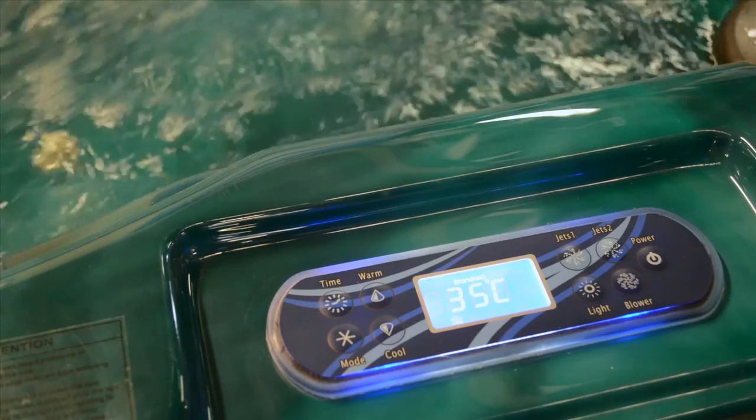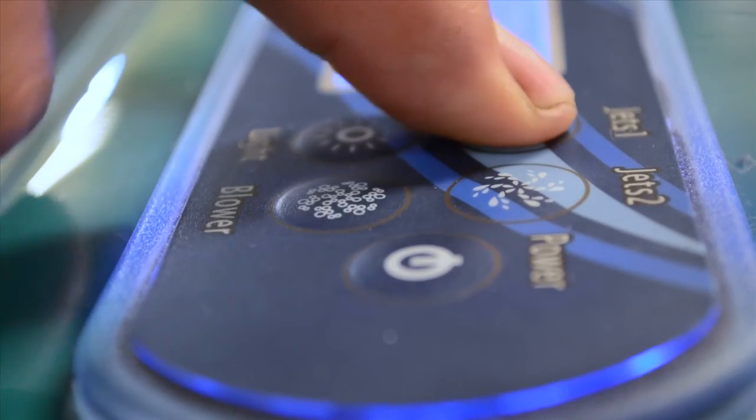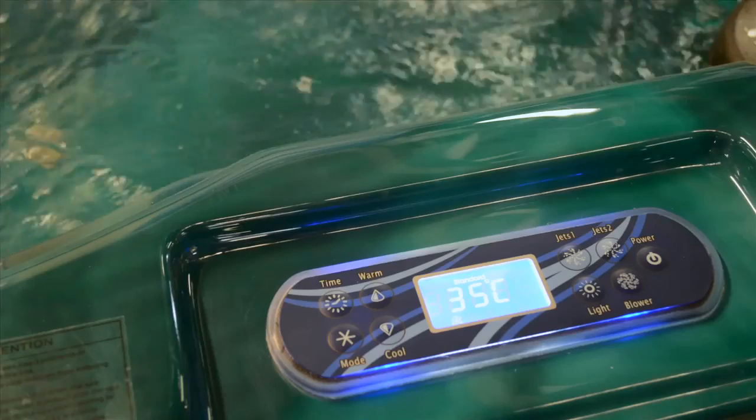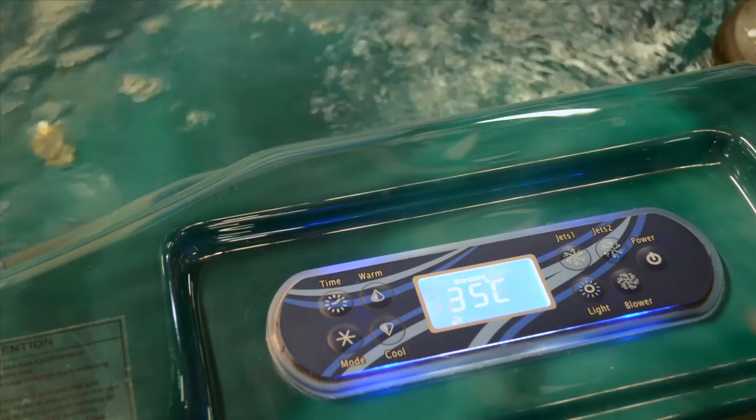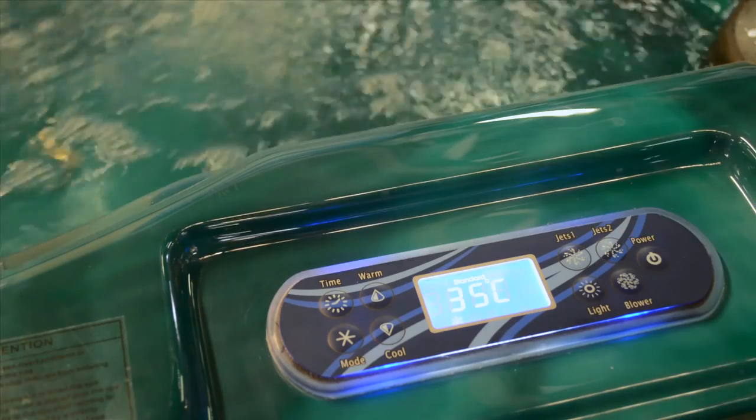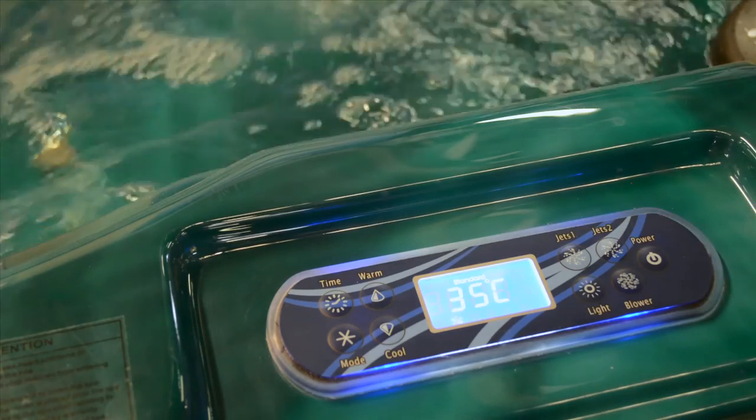If you have a two-pump spa, pressing the jets one button will turn on your first jet pump. This powers half of the jets. The jets two button turns the second jet pump on and powers the rest of the jets.